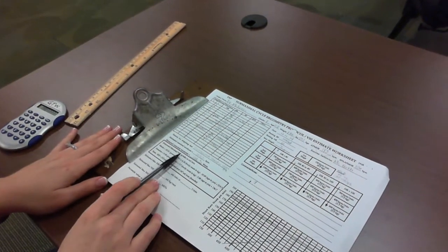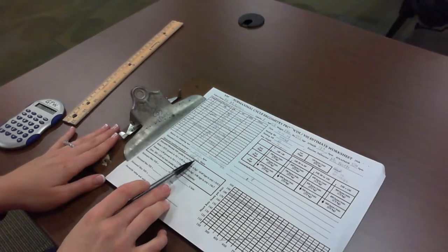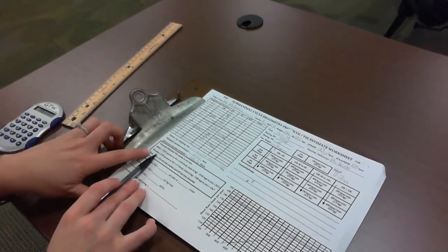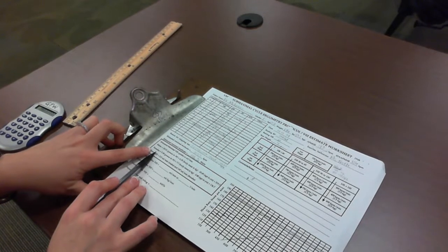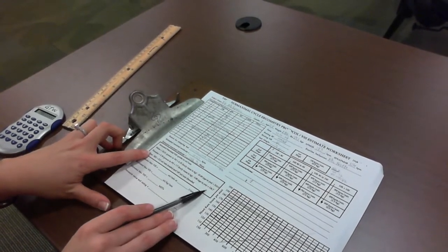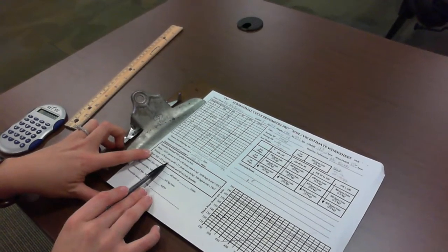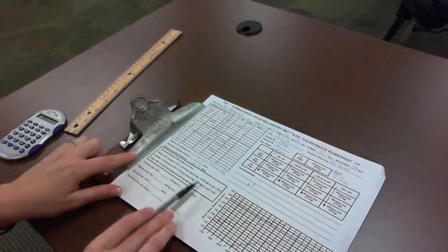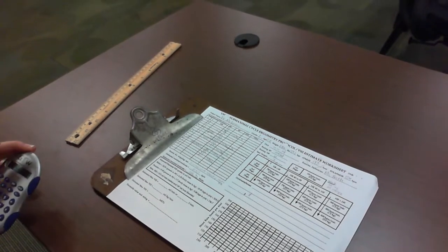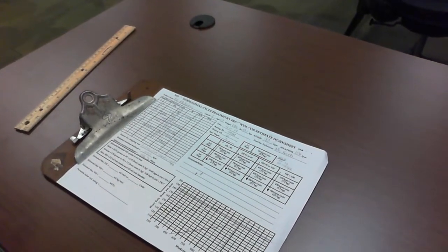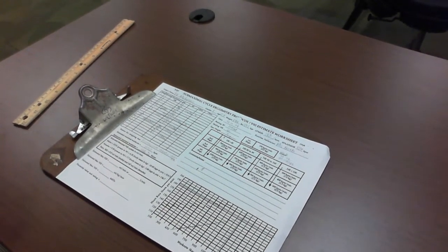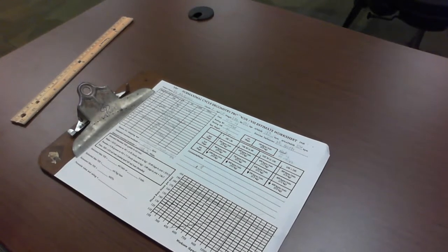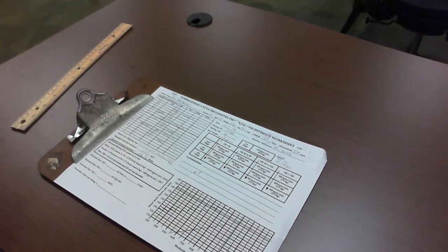So that is her estimated max work rate in watts. Now we take watts and put this into the estimated max VO2 equation for females. For the equation, we need the power in watts, which we just got, her body mass in kilograms, and then her age in years. And we'll calculate that out.